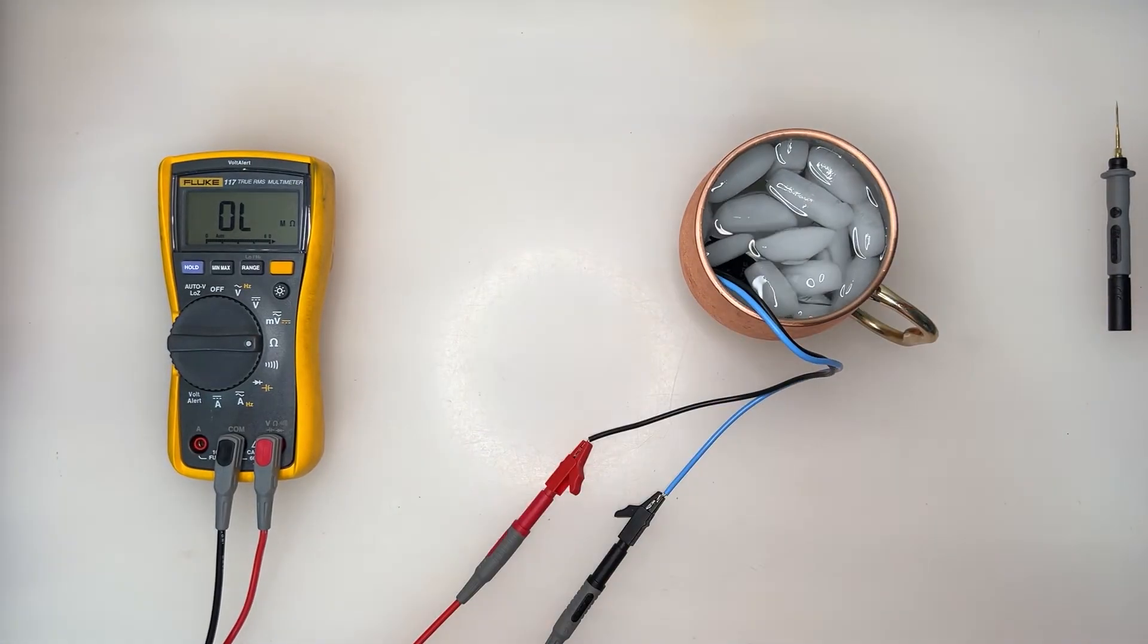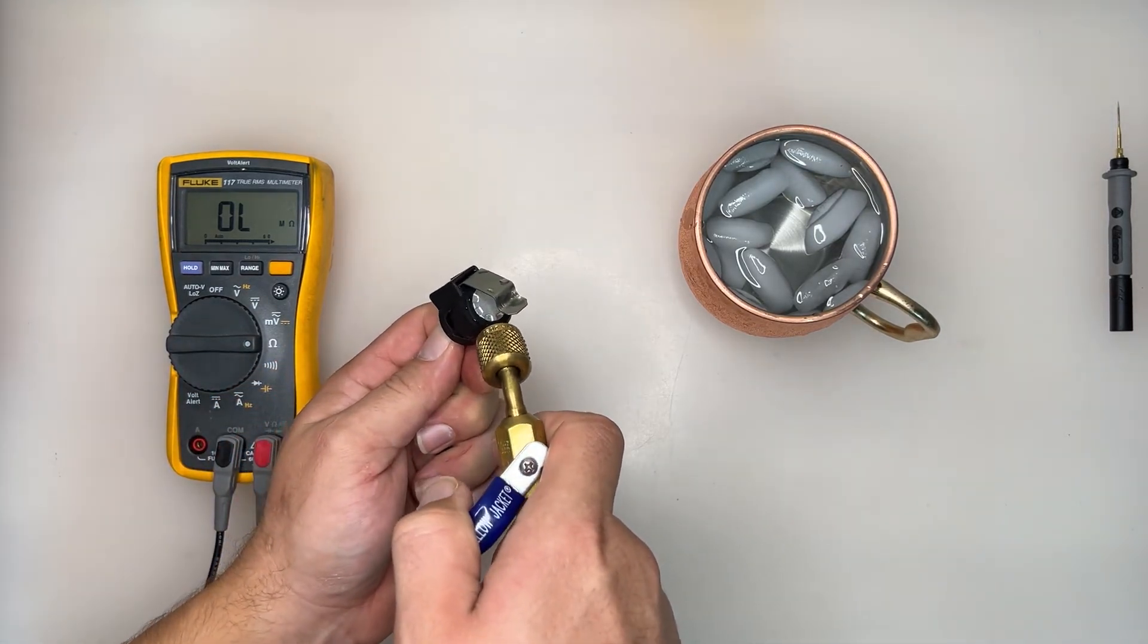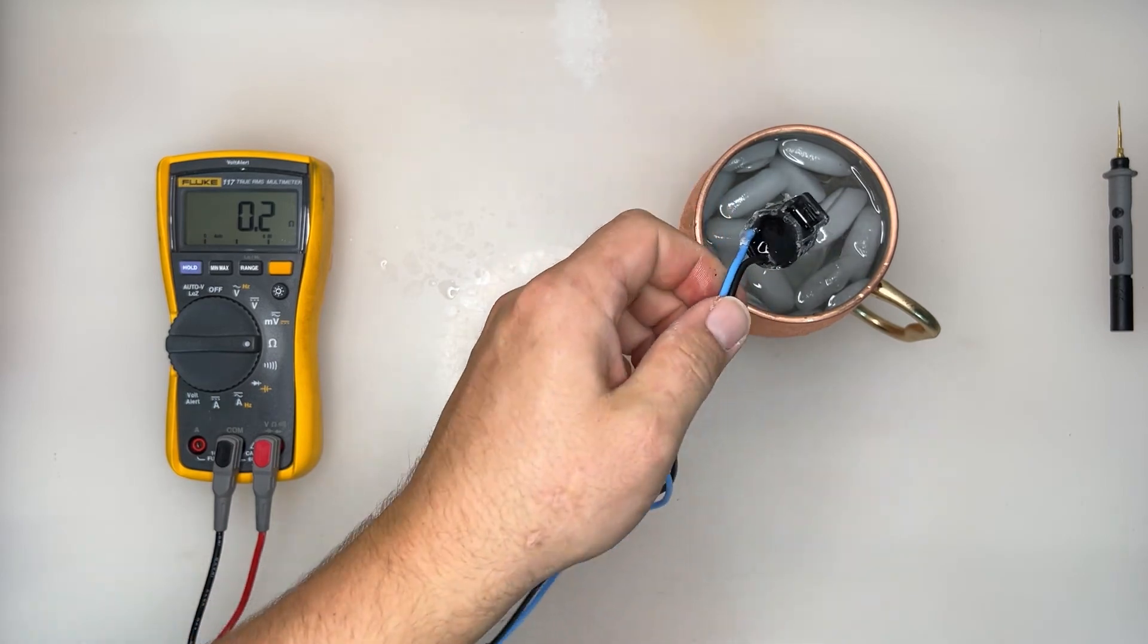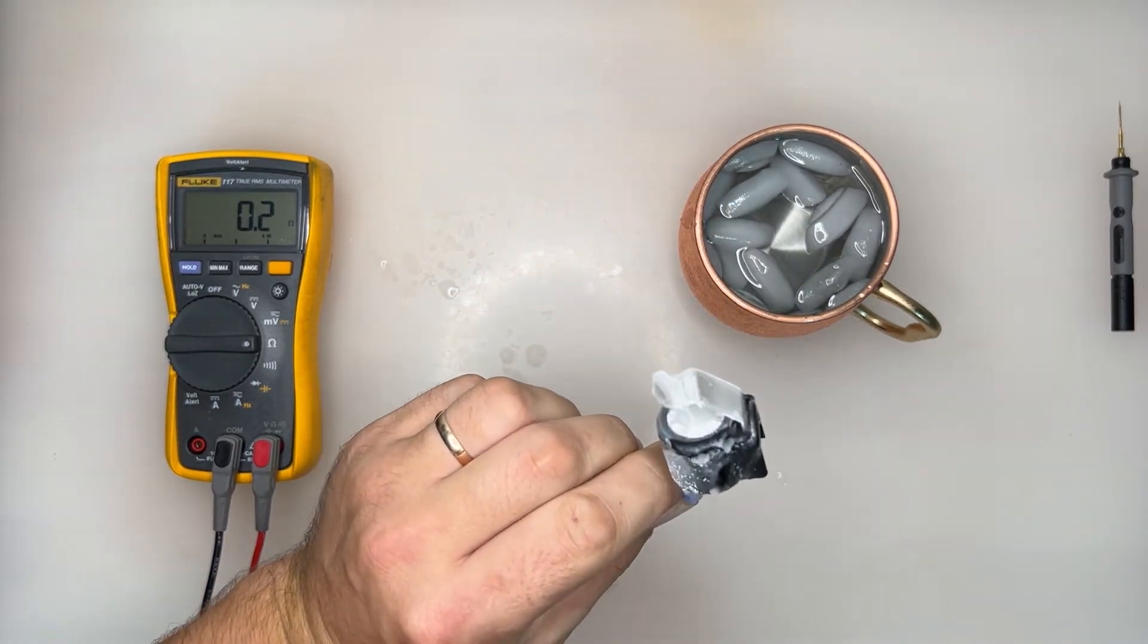So instead, we're going to blast the thermostat with some North Pole air in a bottle. And just like that, the thermostat closes and starts reading a resistance value.